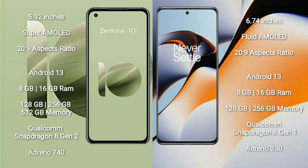Asus Zenfone 10 runs on the Android 13 operating system. OnePlus 11R also runs on the Android 13 operating system. Asus Zenfone 10 comes with 8GB or 16GB RAM and 128GB internal storage.